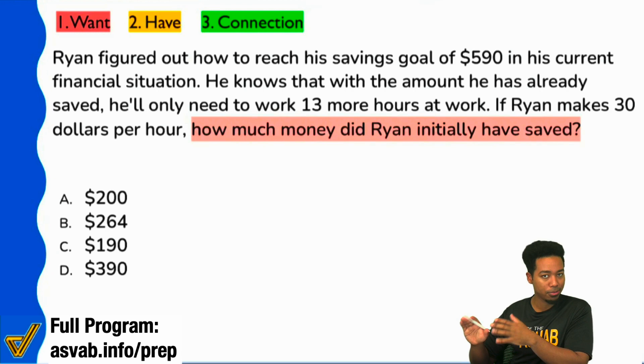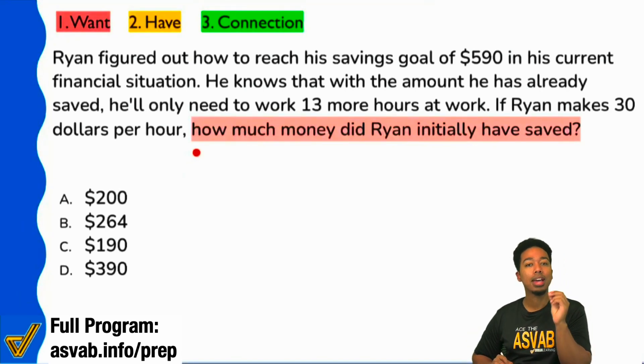You can ignore that at first. You can focus your attention right there after a who, what, when, where, how, how many, how much, which of the following. You always want to look at that and then move on from there. So, how much money did Ryan initially have saved?